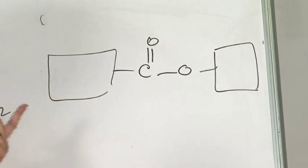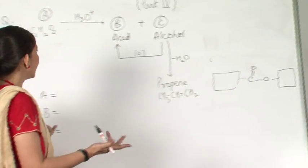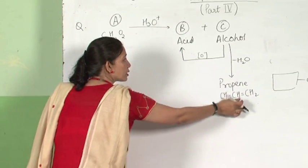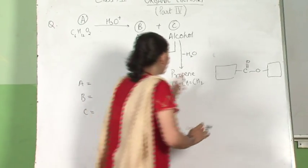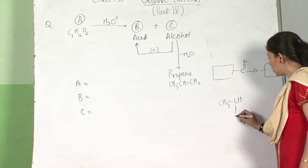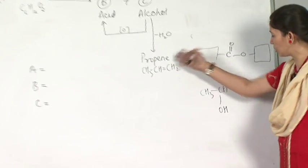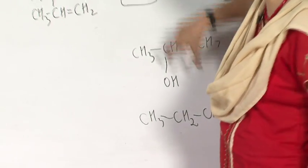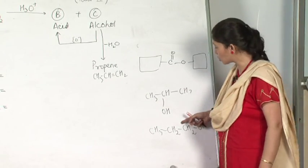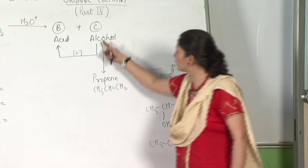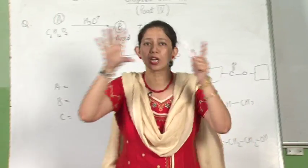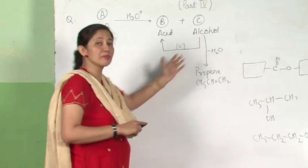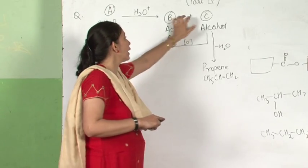Since there are 6 carbon atoms total, I need to fit them — 3 on one side or some other distribution. Compound A is an ester. The alcohol on dehydration gives propene, so compound C is either propan-1-ol or propan-2-ol. The clue is: C on oxidation gives acid B. From the oxidation chart, a primary alcohol gives an aldehyde then an acid, while a secondary alcohol gives only a ketone. So the alcohol must be primary, not secondary.